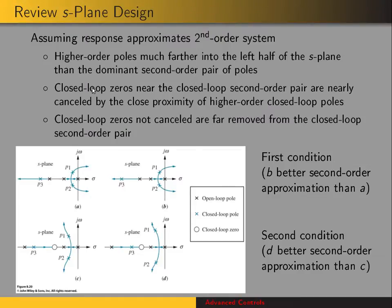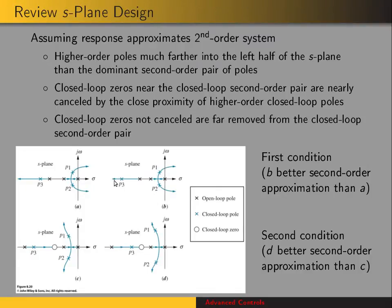In order to approximate a second-order system, the higher-order system has to meet certain criteria. Either the higher-order poles are much farther into the left half of the S-plane than the dominant second-order pair of poles. For example, here's a third-order system where the black X's are the open-loop poles and the root locus shows the possible closed-loop poles. The system in figure B is a better approximation of a second-order system because the higher-order pole is farther to the left.